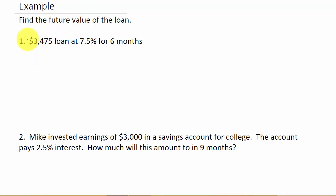It says, find the future value of the loan, so $3,475 loan at 7.5% interest for six months. Alright, so let's remember our formula is A equals P times 1 plus RT.